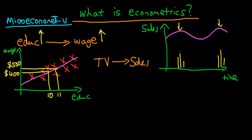Econometrics is a way of understanding, for this sort of time series data, whether TV advertising causes sales to go up. This is slightly different from the previous example in that we're dealing with what we call time series data, whereas the original data was what we call cross-sectional data. But it's still what we call micro-econometric data because we're dealing with data for a particular firm.